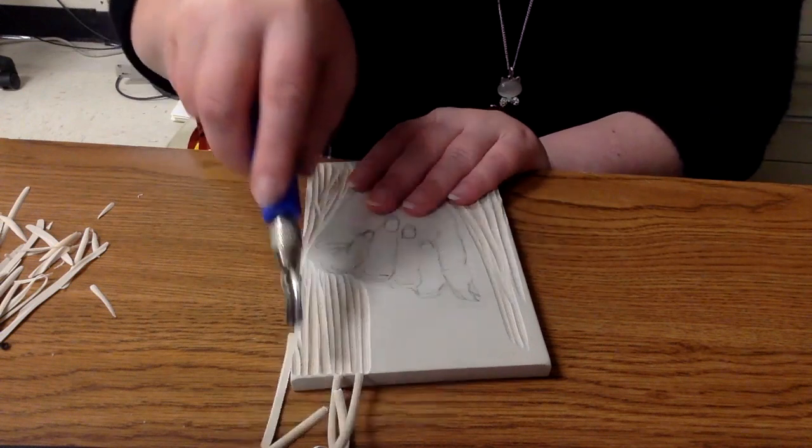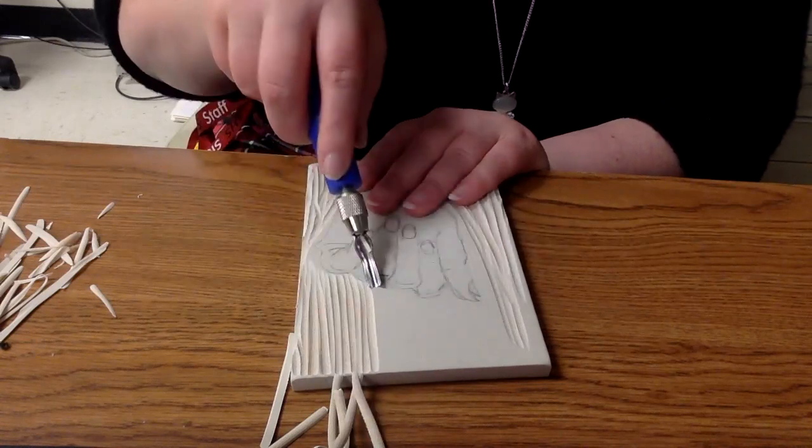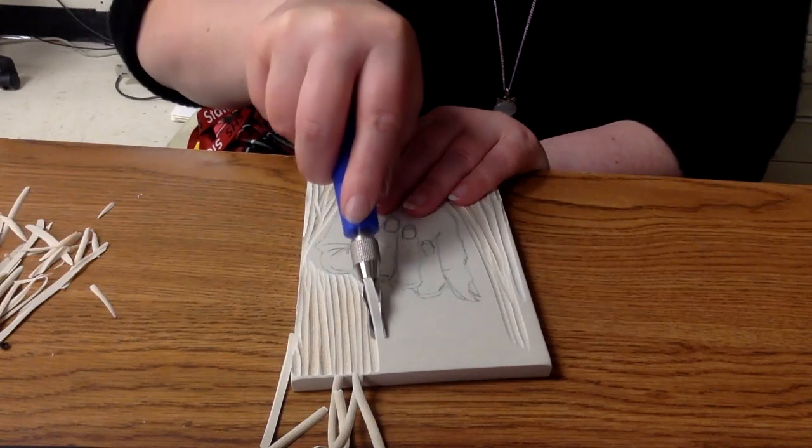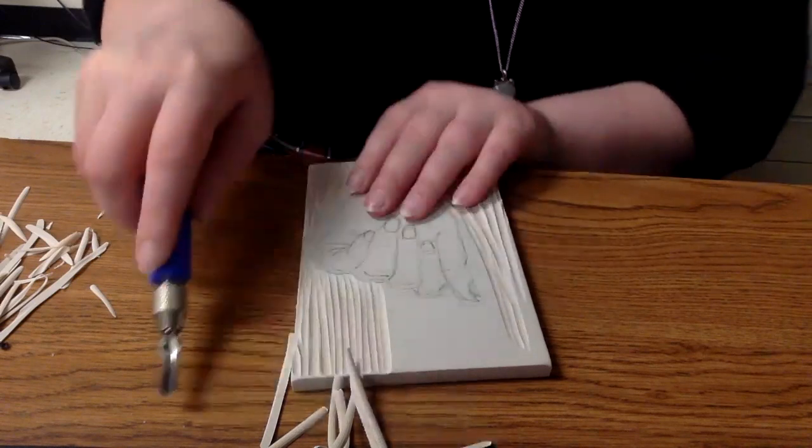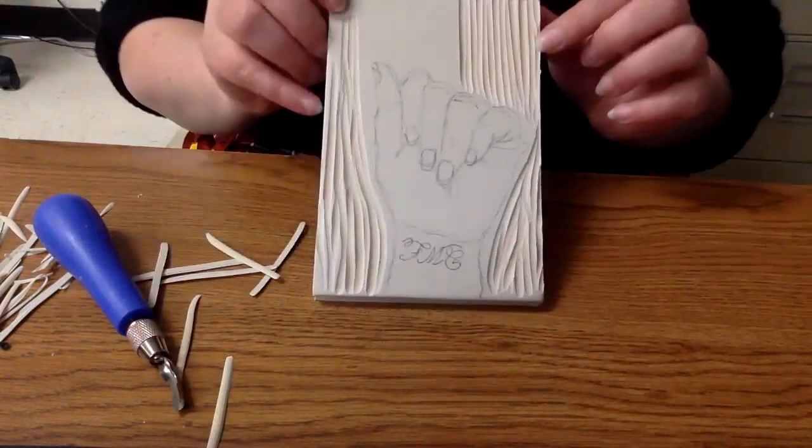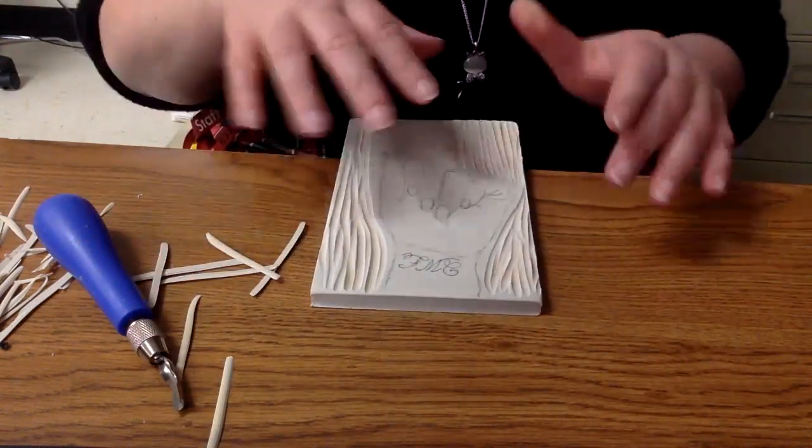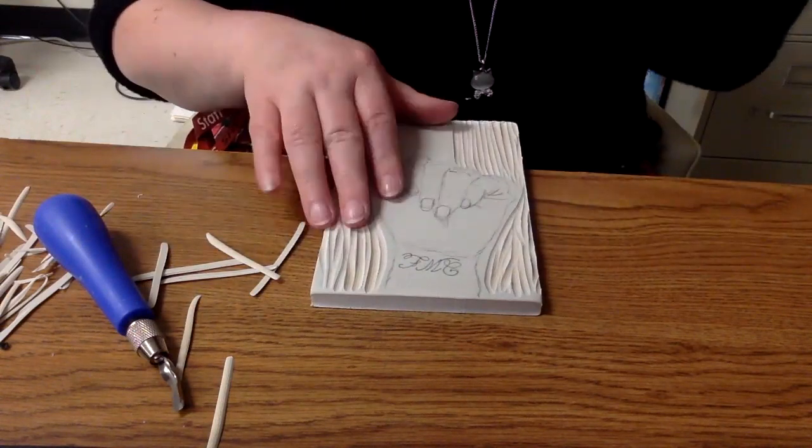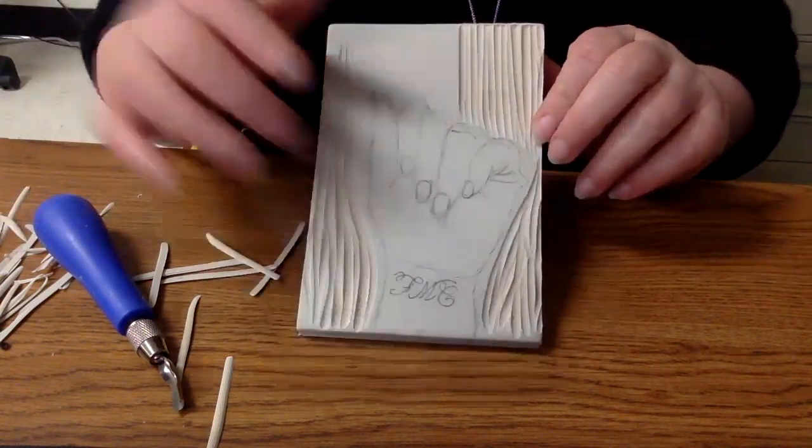Right now I'm just trying to cut away my background and it kind of looks like tree bark and it's okay if some of these things get ink on it later because it adds that nice texture to the background.